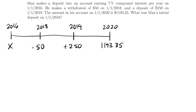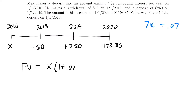We want to know what the initial deposit x is. Let's set up the equation as we normally would. The future value equals the initial deposit times 1.07 raised to a power. There are two years between 2016 and 2018, one year between 2018 and 2019, and another year between 2019 and 2020 — a total of four years. Then we subtract our withdrawal of $50 compounded for two years: times 1.07 squared. Then we add $250 compounded for one year: times 1.07.